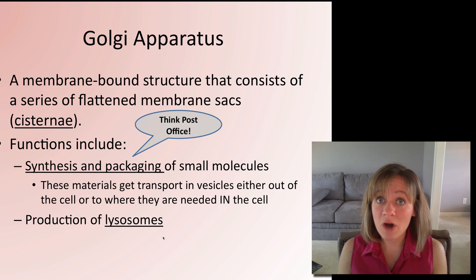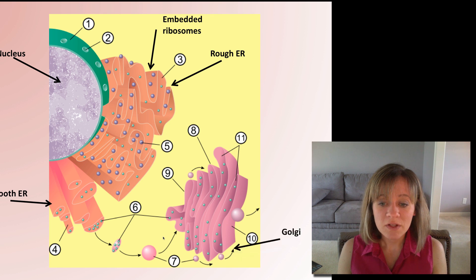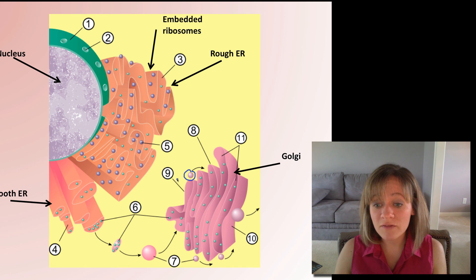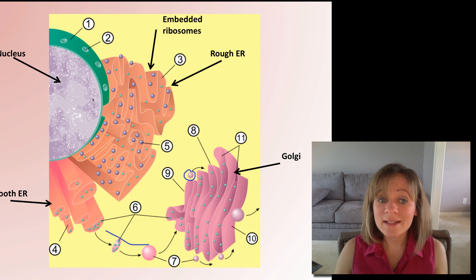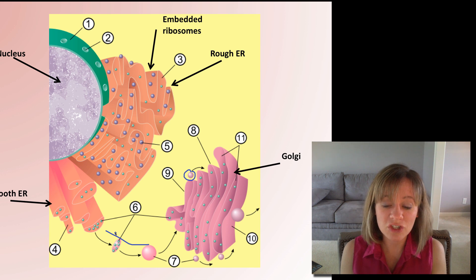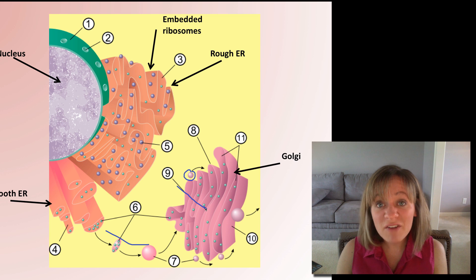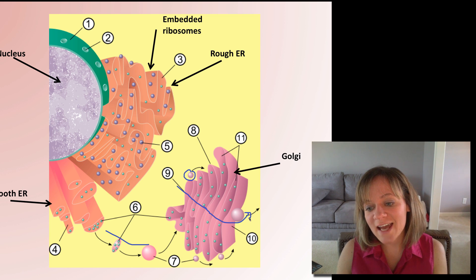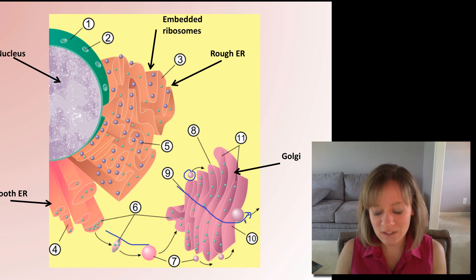Think post office when you think Golgi apparatus. Here is the Golgi apparatus, and vesicles coming in from the rough ER or smooth ER — it's all about the interactions. All of these intracellular components interact to make the cell work. Material comes in from one side, gets modified and packaged, and then gets sent out through the other side in a vesicle.